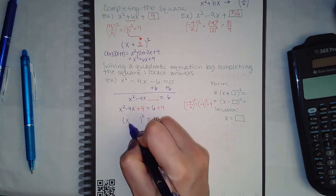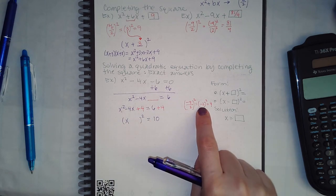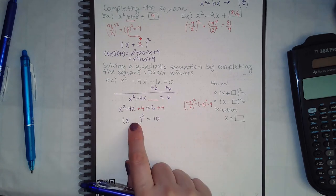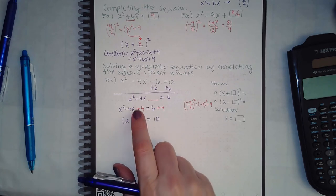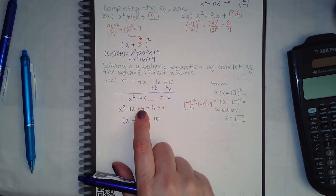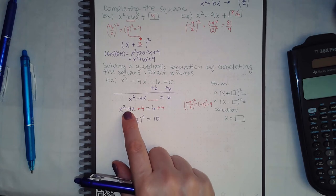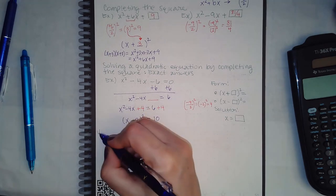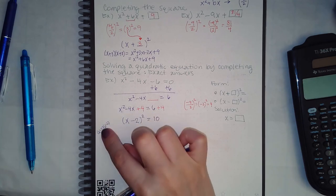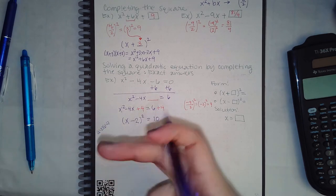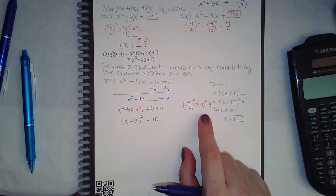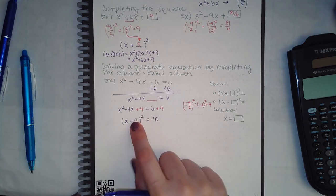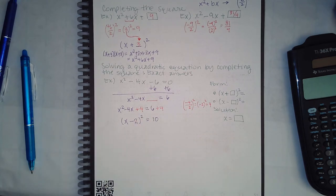Now on the left-hand side I should be able to factor this into a perfect square. Remember, x goes in the front and whatever was inside the parentheses before you squared it goes in here — so it would be minus 2. You can verify: (−2)(−2) = 4 and (−2) + (−2) = −4, matching our expression. Either by old-school factoring or using the shortcut, you get (x − 2)².